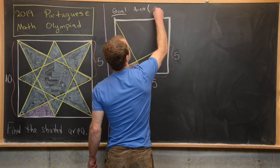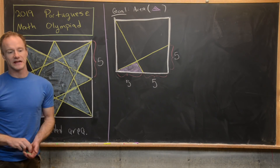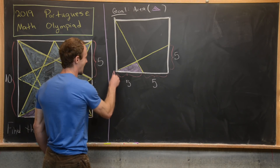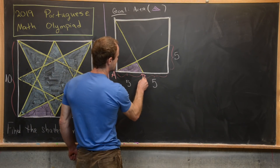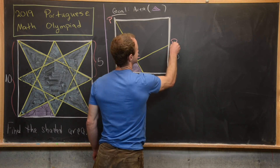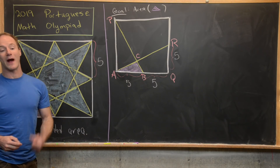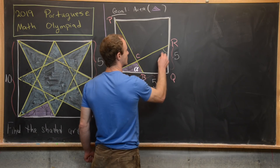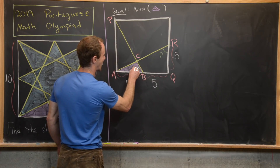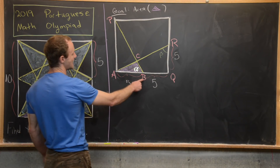Our goal is to find the area of this shaded purple triangle. Let's name the vertices: this one is A, this one B, and this one C. Then we'll name this one up here P, this one down here Q, and this one right here R. Next, I want to label a few angles: this angle has measure beta, and this angle right here has measure alpha.